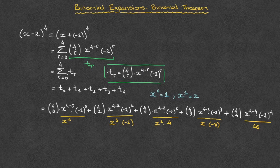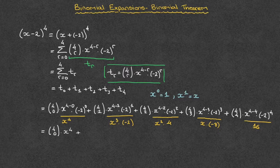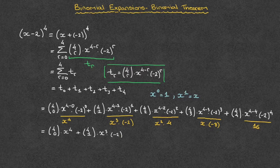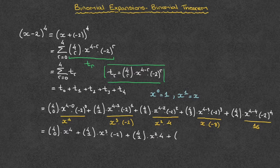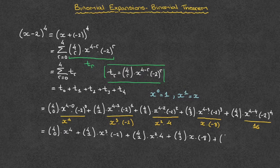So at this stage we can state that this equals: the binomial coefficient 4-choose-0 times x to the 4th, plus 4-choose-1 times x cubed times negative 2, plus 4-choose-2 times x squared times 4, plus 4-choose-3 times x times negative 8, plus 4-choose-4 times 16.